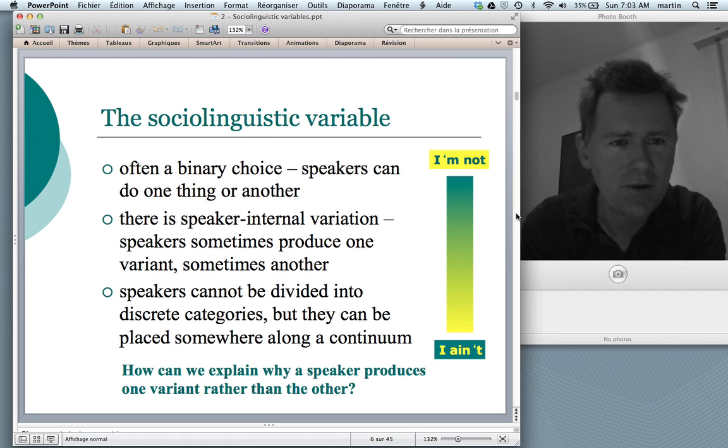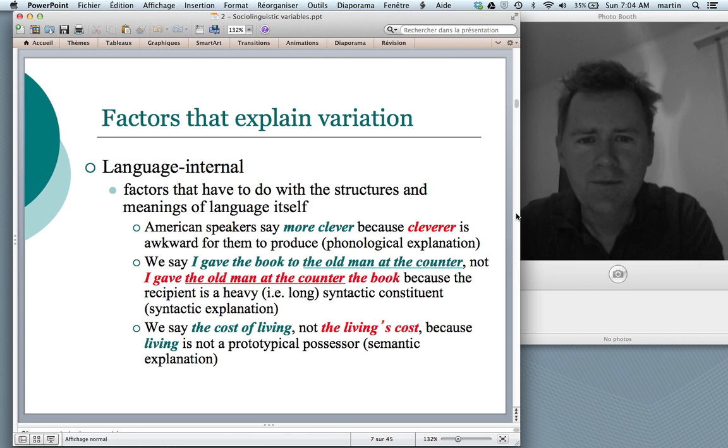The project of sociolinguistics, so to speak, is to explain why a speaker produces one variant rather than another. So that you could, for instance, look at my social profile, who I am, and then make an educated guess about how often I would be saying I'm not or I ain't.